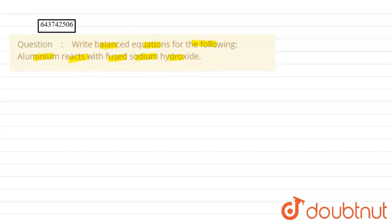Fused NaOH means NaOH in molten state, and aluminum is a group 13 metal. NaOH is a base or alkali, but it is not in aqueous solution, so we will refer to it as base.